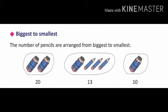In the last set there is only one pencil bundle — there are 10 pencils. Now I will tell you how these pencils were arranged from biggest to smallest. Take number 20: in 20, how many ones and how many tens? There are no ones, and it has two tens.